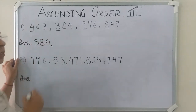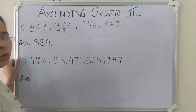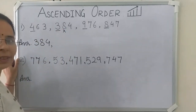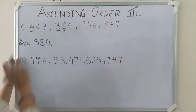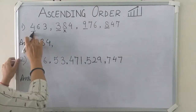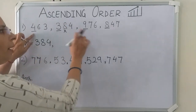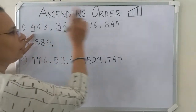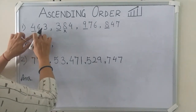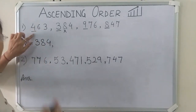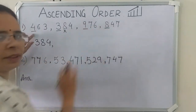Now we have written 384, so we will cut it. Now we have to find the smallest number among these 3 remaining numbers. So we will start from the first number. The first hundreds digit is 4. Is 4 smaller than 9? Yes. Is 4 smaller than 8? Yes. It means 463 is the smallest number among these 3 numbers.